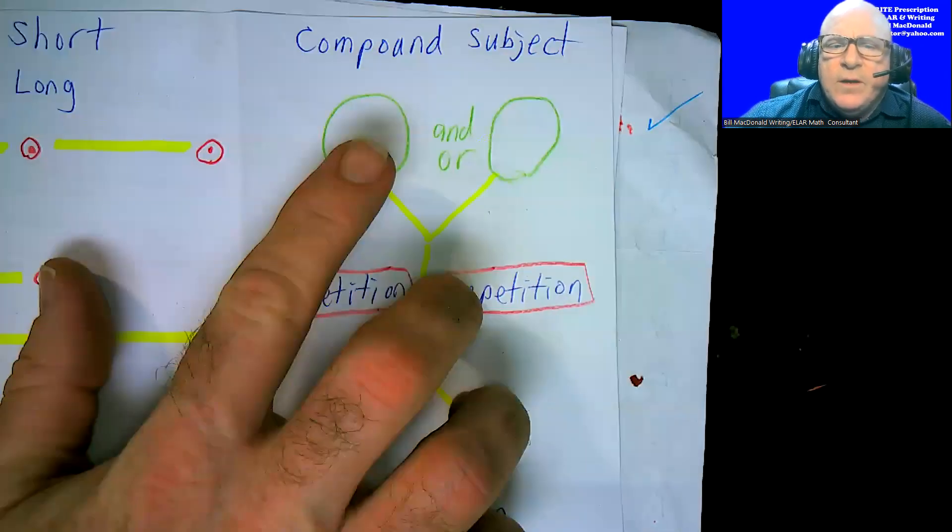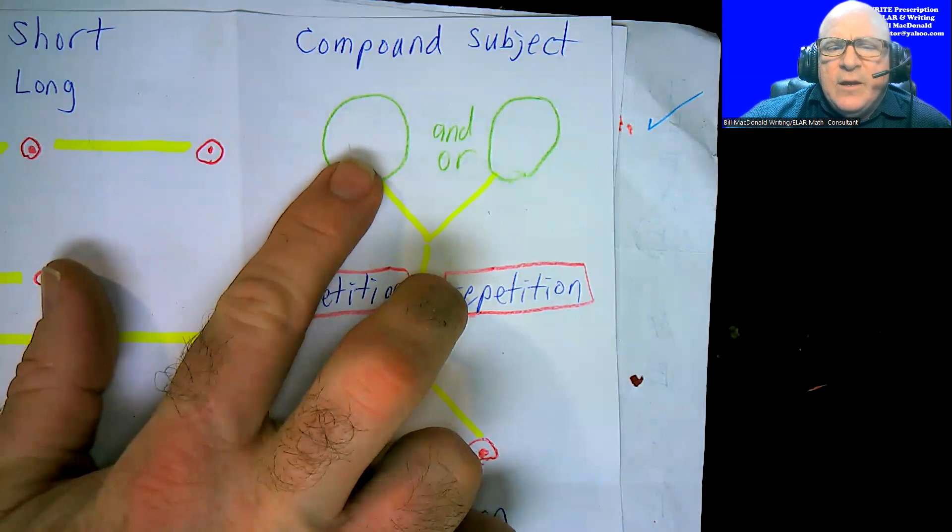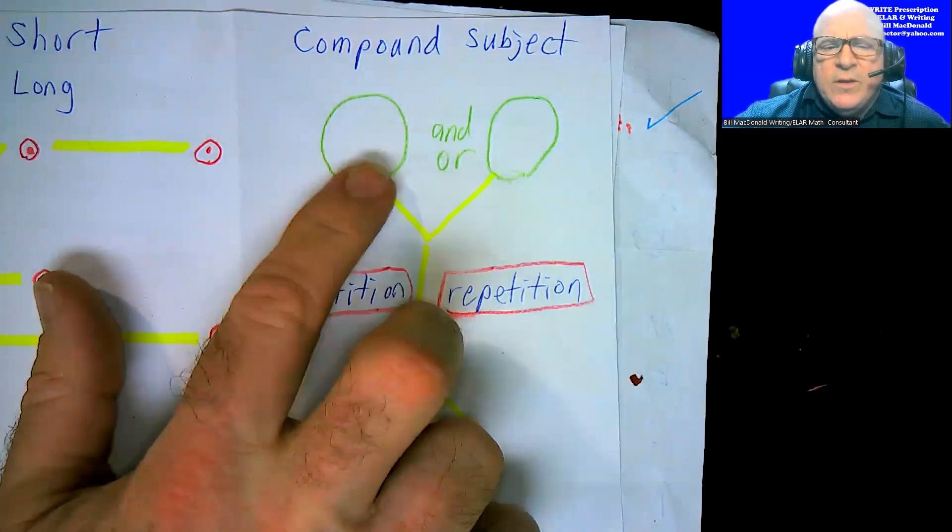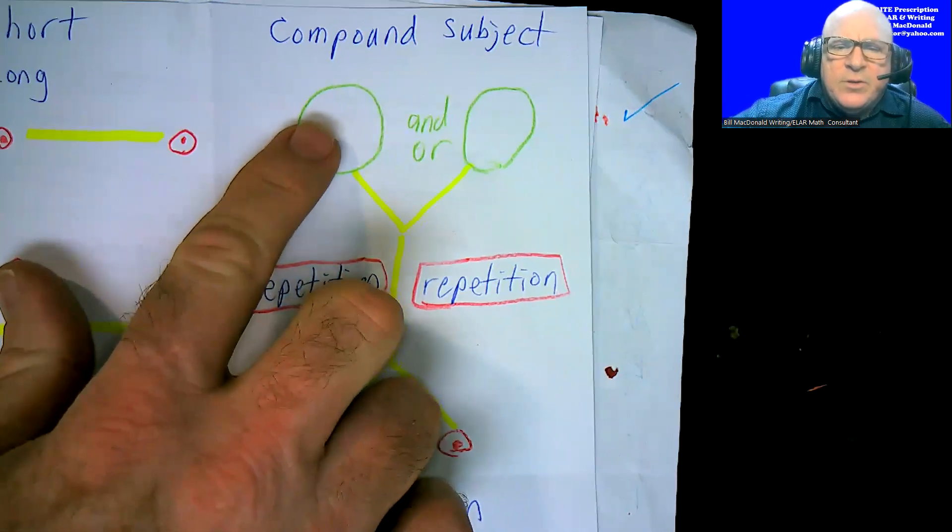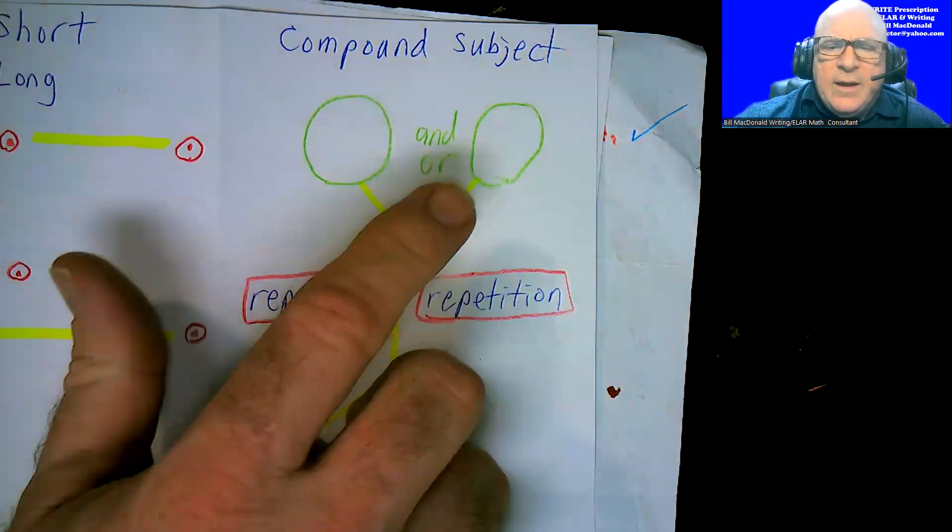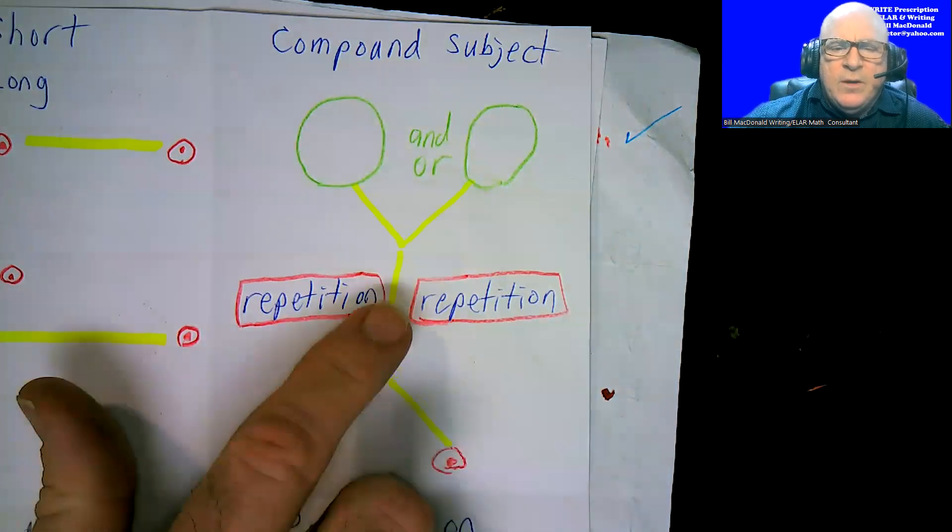Compound subject. Let's say you have a person, a place, a thing, an idea, and another person or place or thing or idea doing the same thing. So basically you'd see that person doing one thing with a period and another person doing one thing with a period.